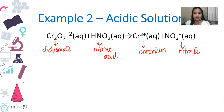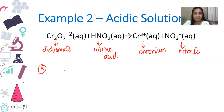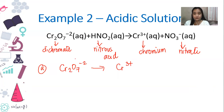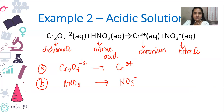For the first step, we are splitting the whole equation into two half reactions. As a rule, you look for similar substances on both sides and pair them up. In this case, let's pair up dichromate and chromium. So our first half reaction is: Cr2O7 2- yields chromium (Cr3+). The second half reaction is: HNO2 yields NO3-.